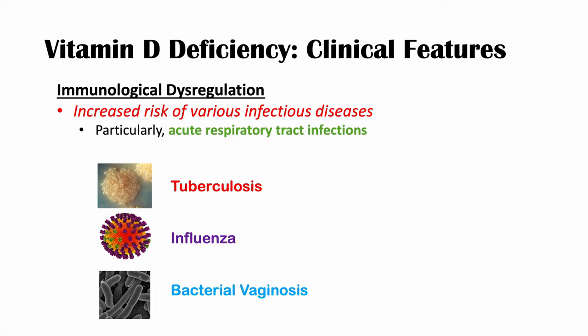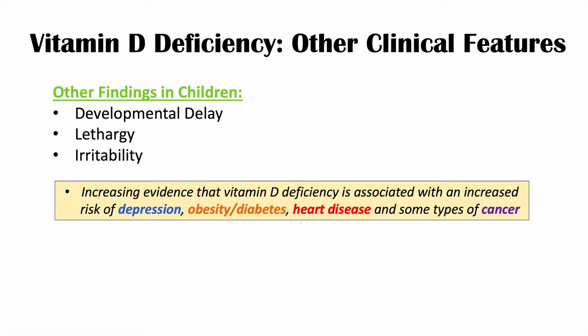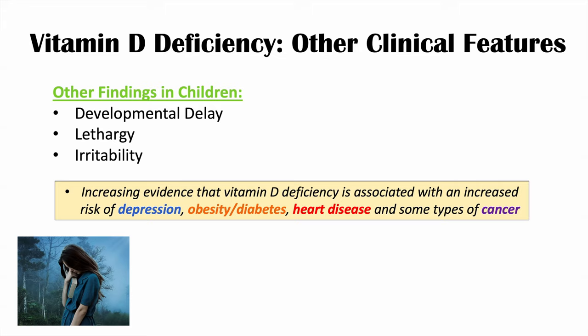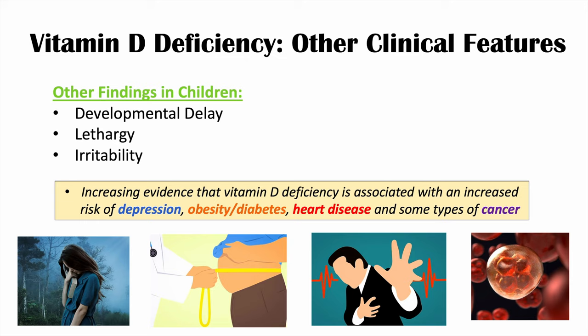Additional clinical features can occur in children, including developmental delay, lethargy, and irritability. There is also increasing evidence that vitamin D deficiency is associated with an increased risk of depression, obesity, diabetes, heart disease, and some types of cancer. There's a lot of research still to be done, but vitamin D deficiency is clearly associated with many different conditions, each of which requires its own discussion.